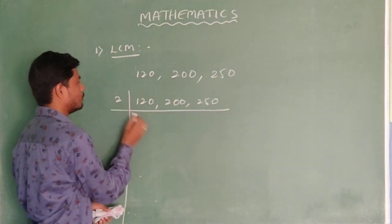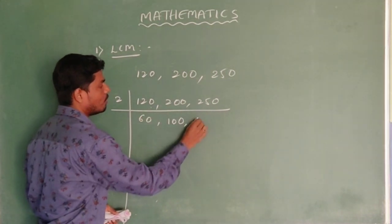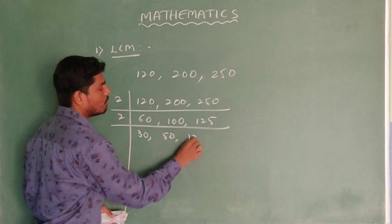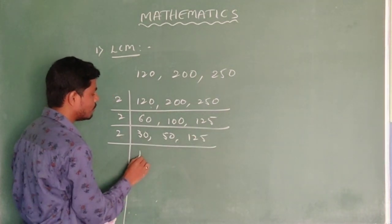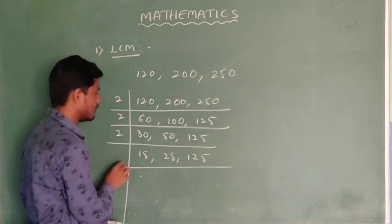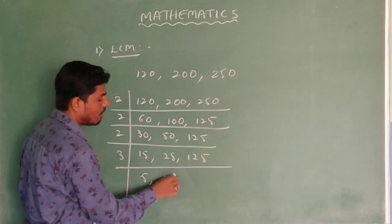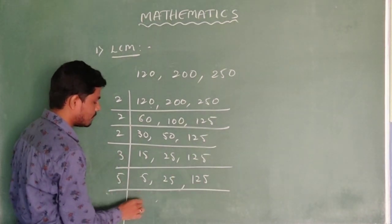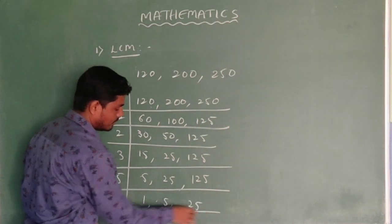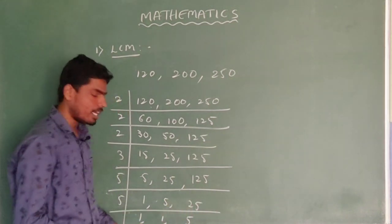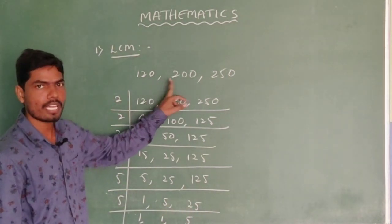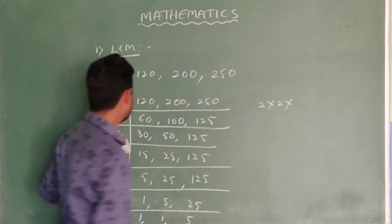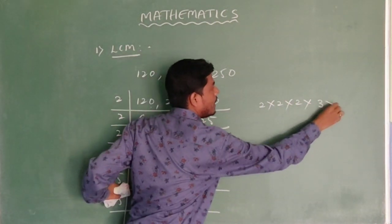Start with the 2 table. Divide all three numbers repeatedly by 2. Continue dividing by 2 as long as at least one number is divisible. Then switch to 3: divide where applicable, and if a number does not go into the 3 table, write it as is. Then take 5: 5 into the remaining values. Finally 5 is the only prime number left. The required LCM for these three numbers is 2 × 2 × 2 × 3 × 5.